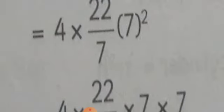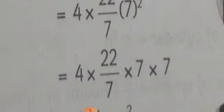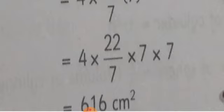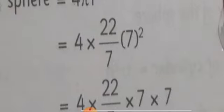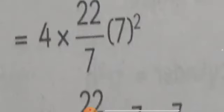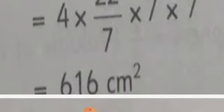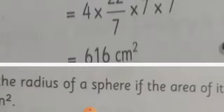After simplification, 7 squared means 7 multiply by 7. The 7s cancel out. After solving, you get 616. Since the radius was 7 cm, you write centimeter squared. The surface area is 616 cm².